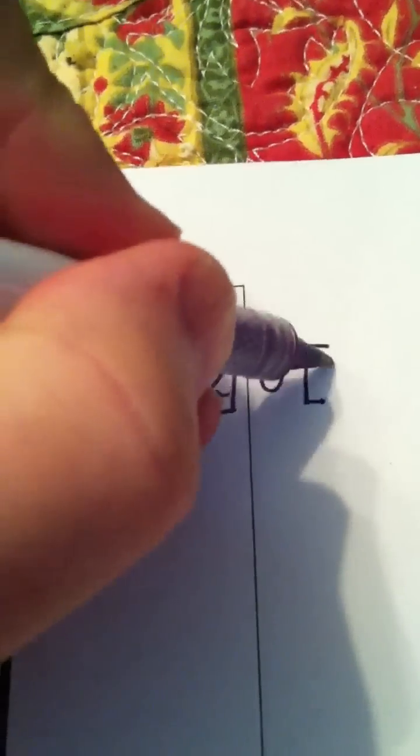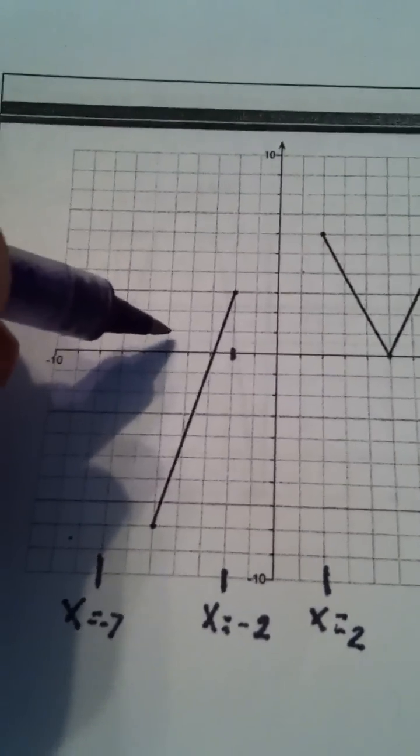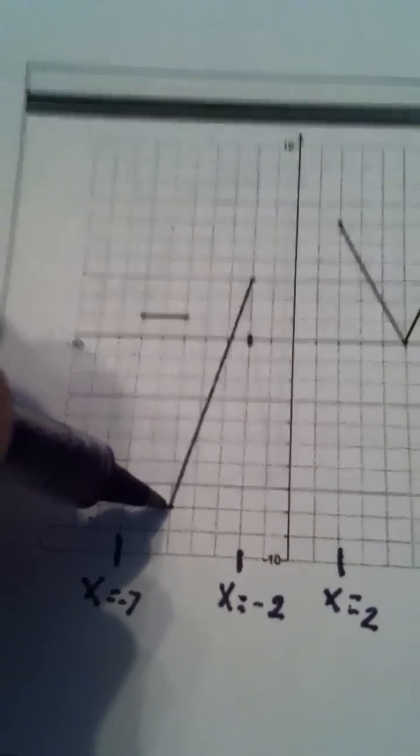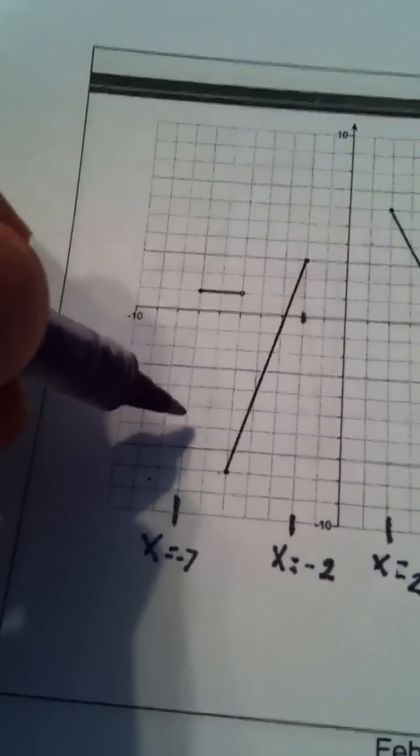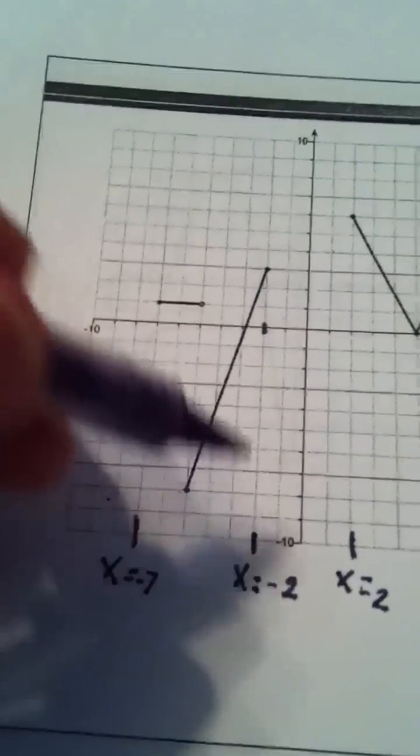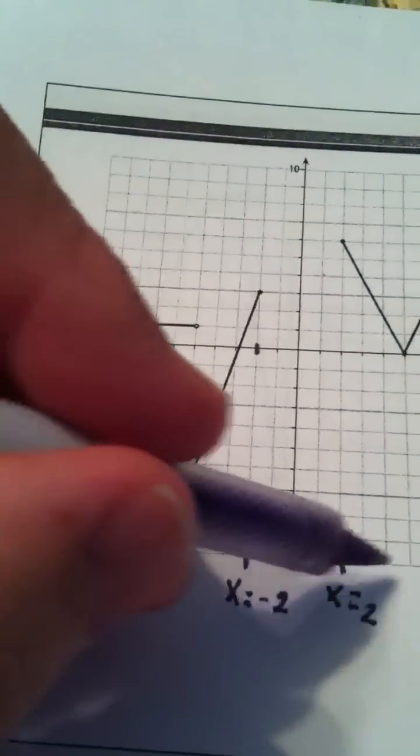And that would be union from 2 included to 9 included. So the only part about this that's weird is that was a little hole but it didn't matter because the x value that was left out there immediately got filled in right there. So you just scan from left to right, from negative 7 to negative 2, then again from 2 to 9. That is our domain.